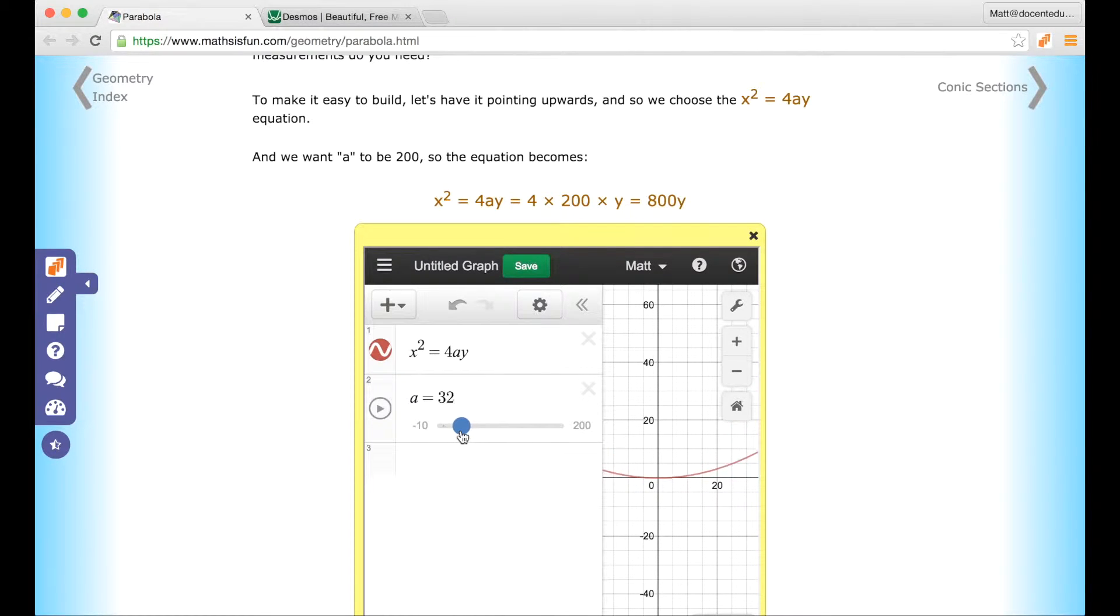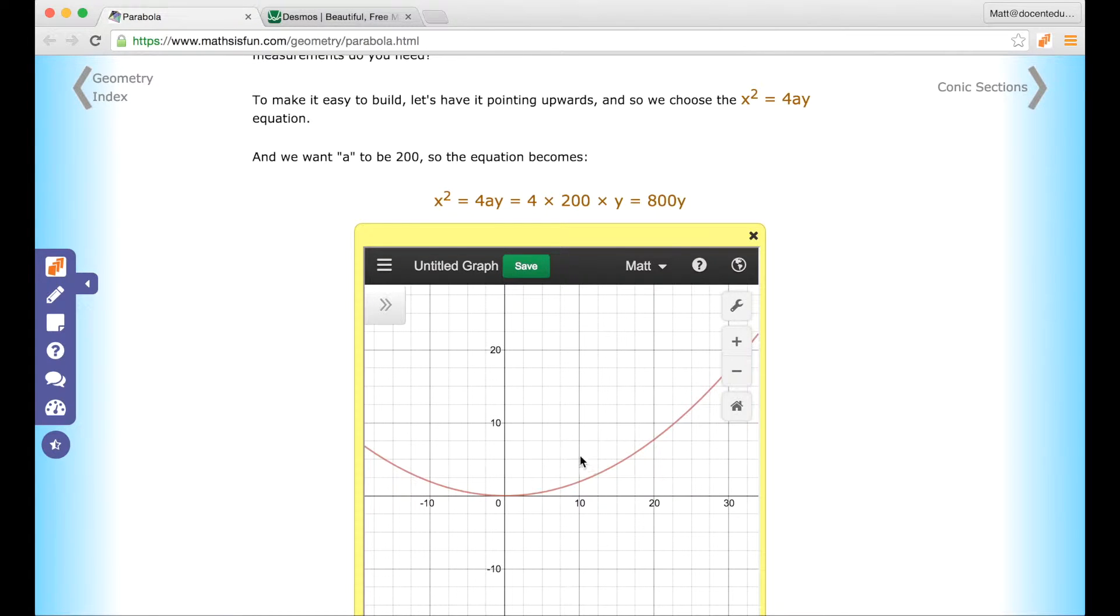So here we have a slider bar so students can explore how as they change A, what the graph looks like, and then when they go over to the graph they can also inspect any point along that line. So let's get started.